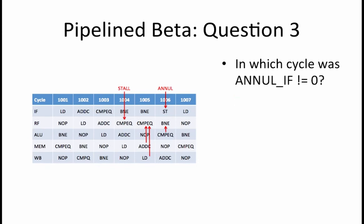Next, we want to determine in which cycle null_IF was not equal to 0. Recall that null_stage control signals specify when an annulment is initiated in that particular stage. In order to initiate an annulment, the instruction that is currently in the IF stage is replaced with a NOOP. This occurs in the IF stage when we need to annul a branch delay slot. In our example, this occurs in cycle 1006.